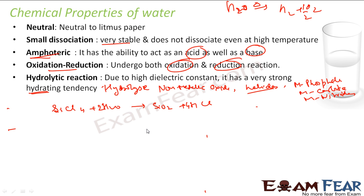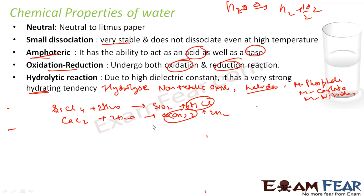You can also see hydrolysis with metallic carbides, phosphides, and nitrides. For example, taking calcium carbide (CaC2) and reacting it with water illustrates this type of hydrolysis reaction.